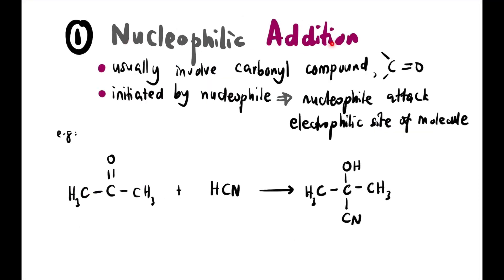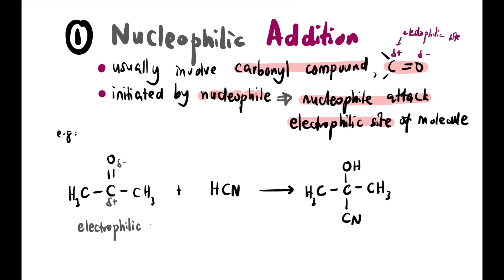Nucleophilic addition usually involves carbonyl compounds (C=O). It is initiated by a nucleophile attacking the electrophilic side of the molecule. The carbon in carbonyl is partially positive — the electrophilic site. For example, carbonyl reacts with HCN to give one product. The double bond breaks, and CN and OH are added to that carbon. This is addition because two reactants give one product.